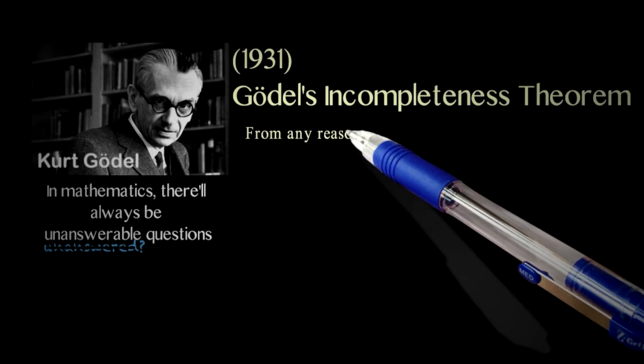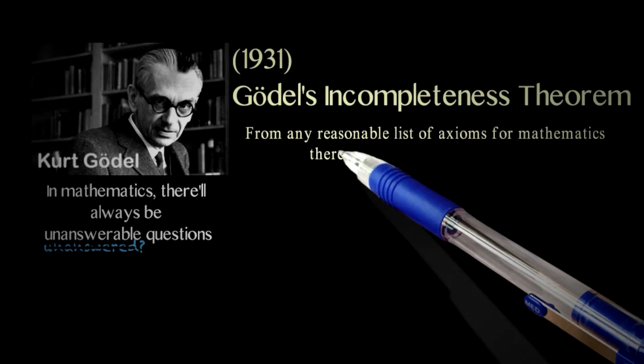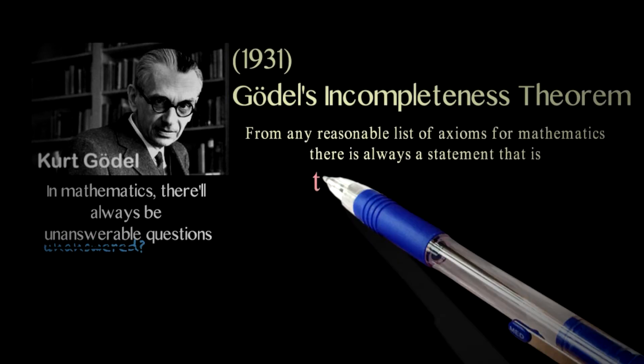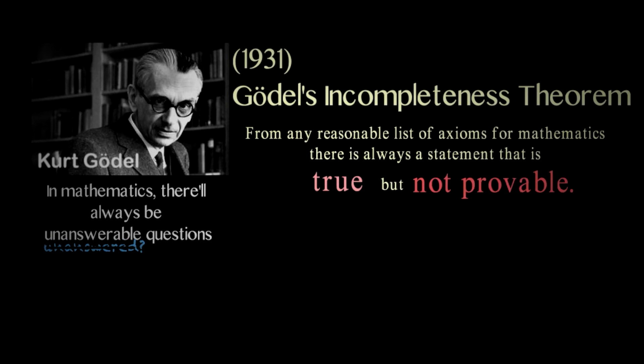This theorem says that from any reasonable list of axioms from mathematics there is always a statement that is true but cannot be proved. This would be a statement that, despite being true, we won't be able to be certain about it. We won't be able to produce a proof for it. And in mathematics the only way to be certain about something is by proving it. This theorem is not about a limitation on our human capacity to produce proofs. It's a limitation on the actual existence of proofs.